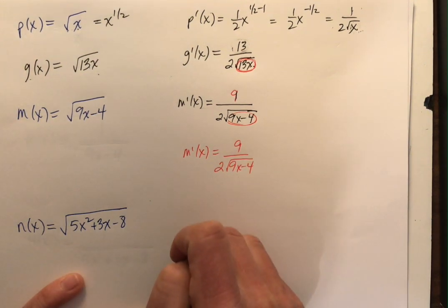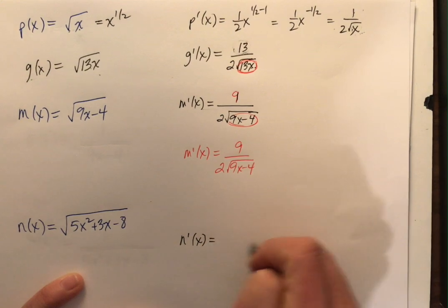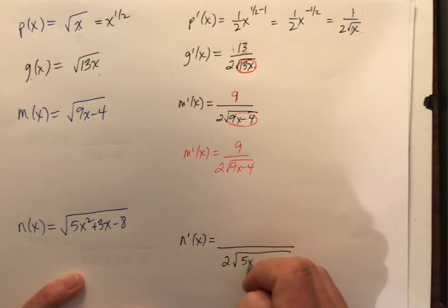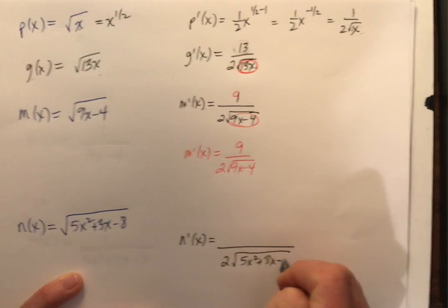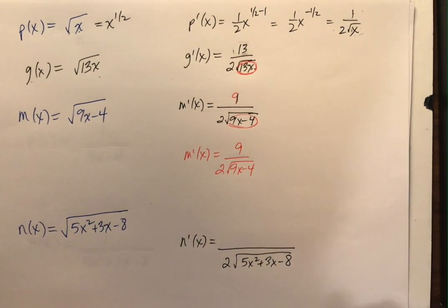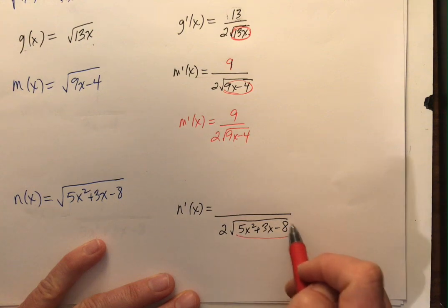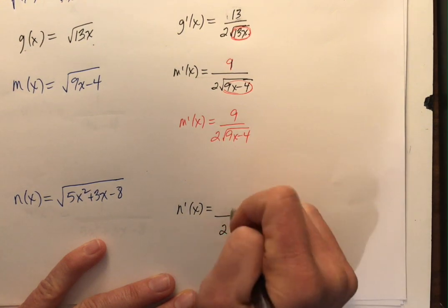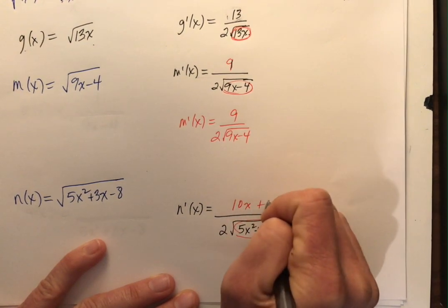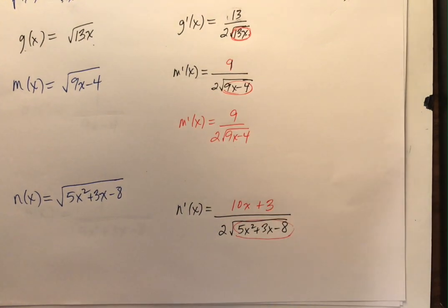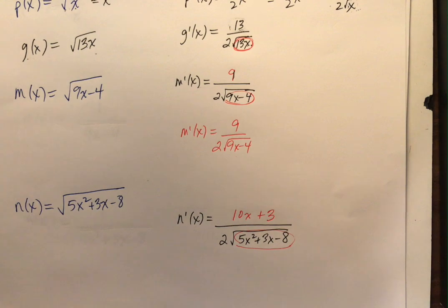Let's give this a try. N prime of x. So let's think of this as 2 times the square root of 5x squared plus 3x minus 8. Now I'm going to take my numerator. My new numerator is going to be the derivative of what's underneath the radical. 10x plus 3. That's a lot there. That's crazy. You're doing great.